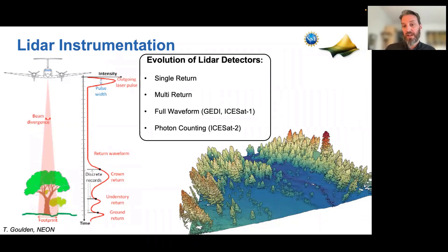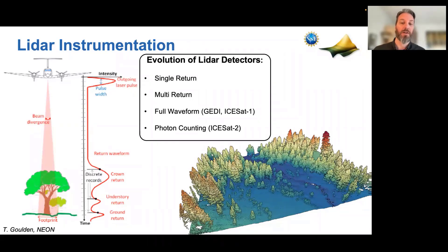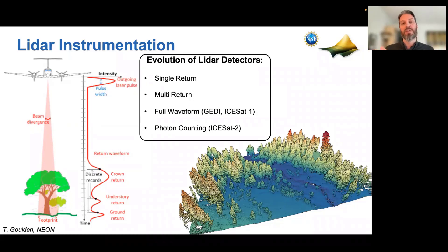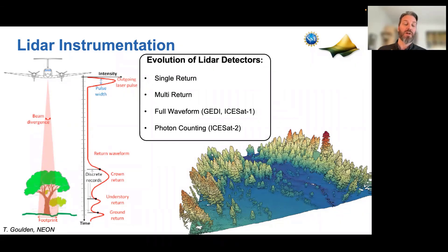Two examples of full waveform data are GEDI and ICESat-1, both NASA missions. A newer system is a photon counting system — NASA's ICESat-2. Photon counting uses a very low-power laser that floods the surface with photons, but critical to the system are very accurate detectors that can detect just a dozen or so photons and determine the ground from that. The downside is it's very algorithm-heavy. Because those detectors are so sensitive, they get a lot of noise from background solar radiation, so they need advanced algorithms to pick out the signal from the noise.